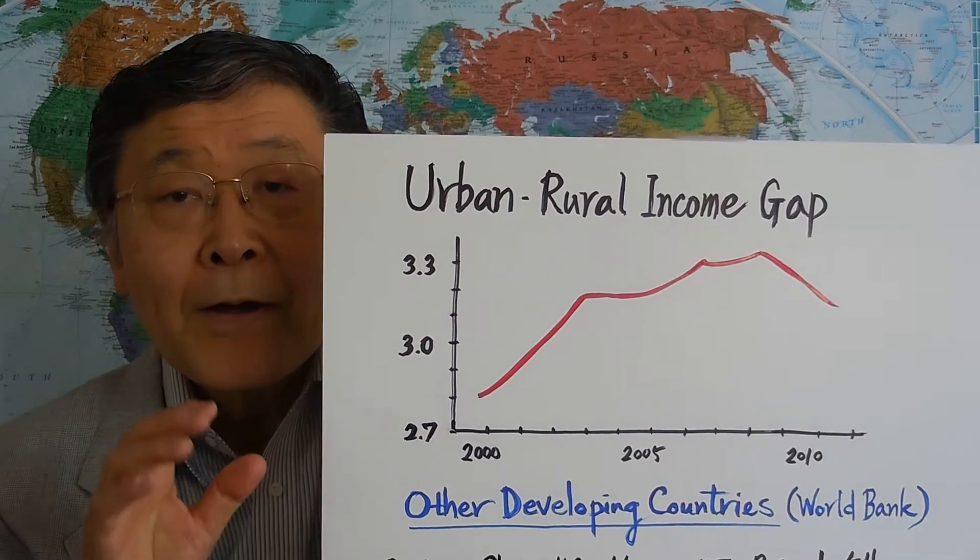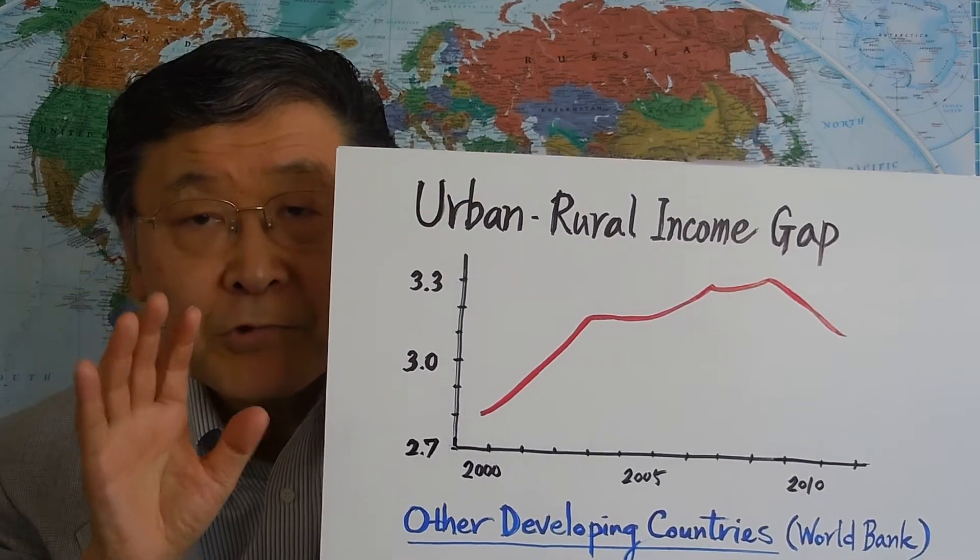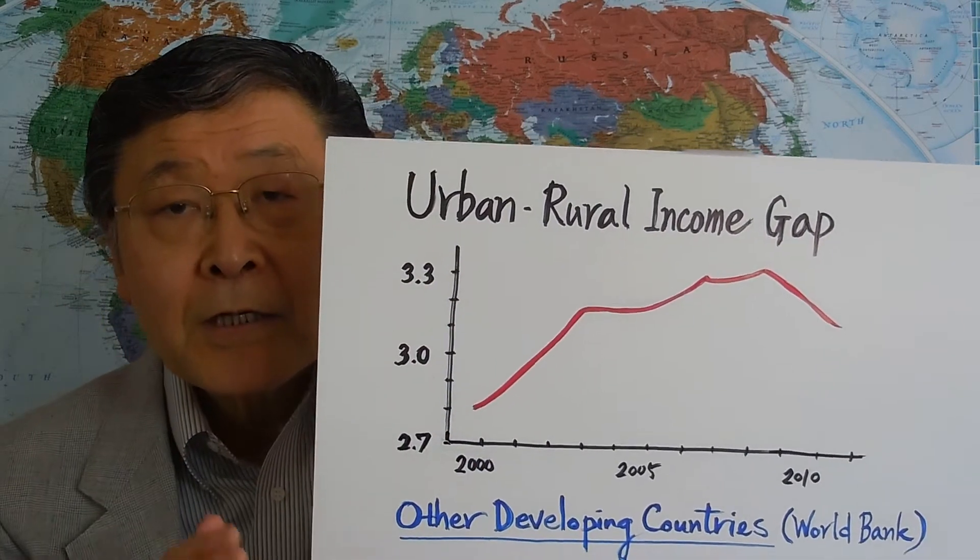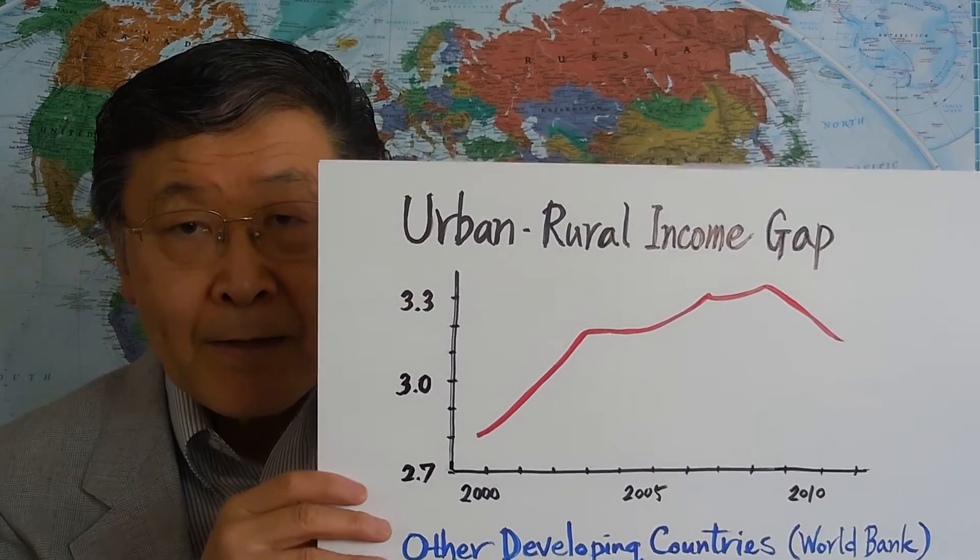Therefore, as more people migrate from rural to urban areas, the wage gap tends to increase. And in fact, the average income in the rich provinces with a lot of urban industrial activities is three to four times as high as that in rural areas with typical agriculture activities. So, that is a problem.